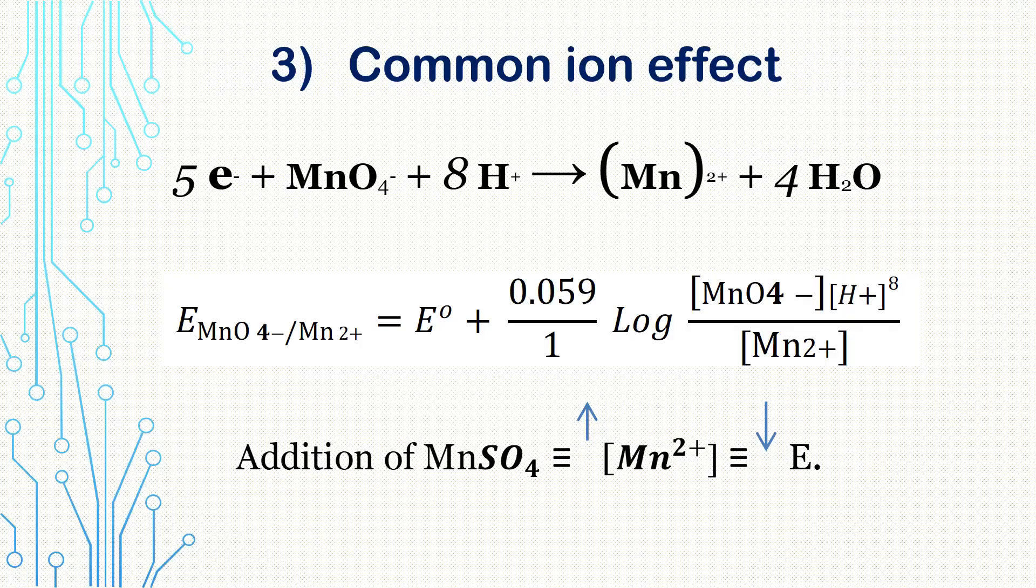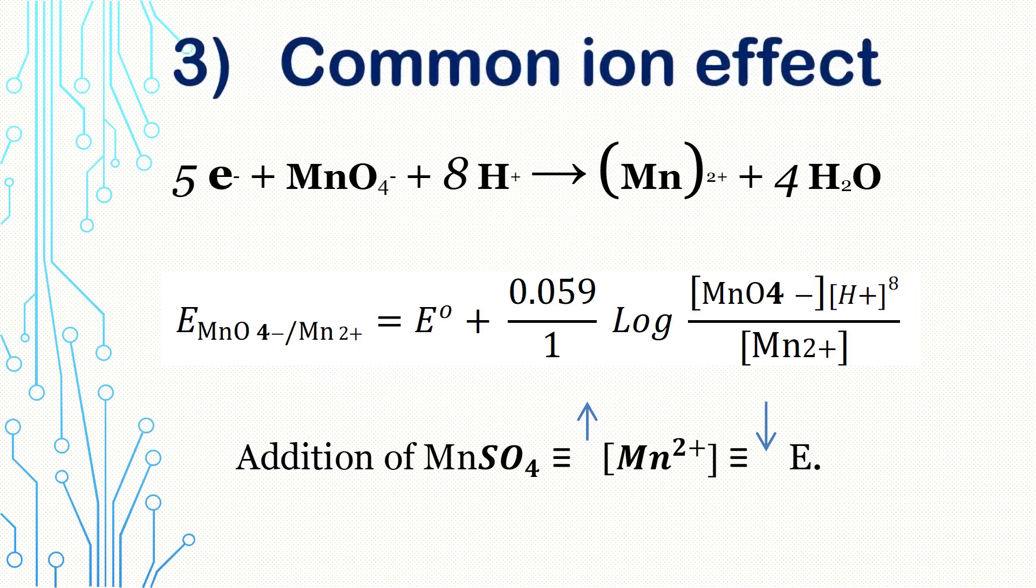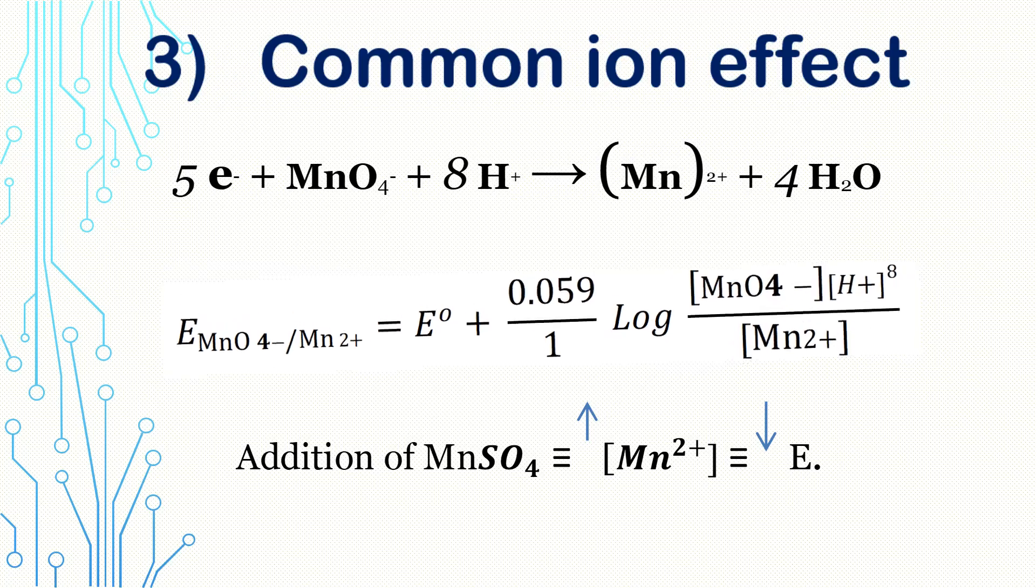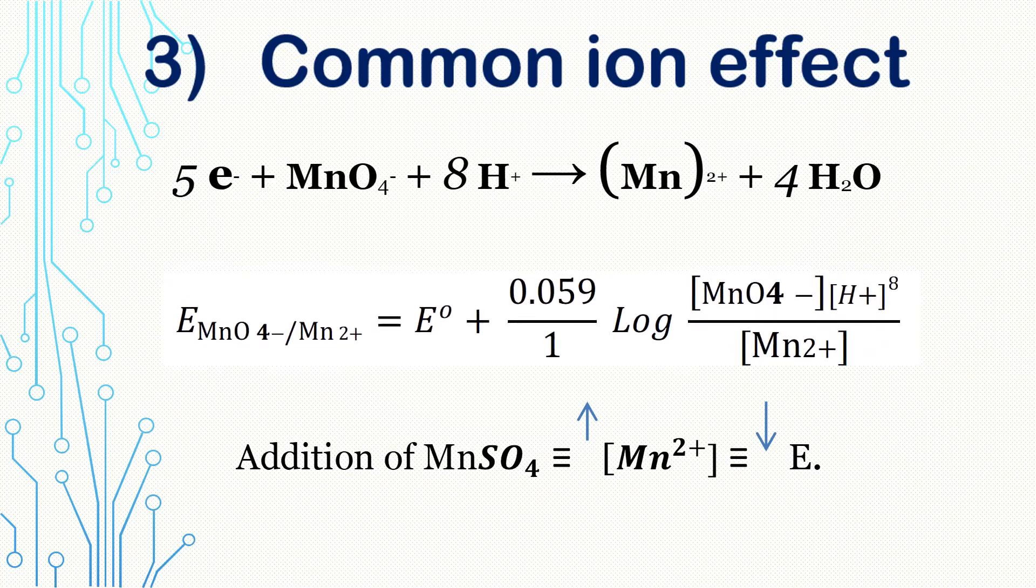And finally, we have our last factor that affects Nernst's equation. It's called the common ion effect. Adding manganese sulfate to permanganate solutions leads to increasing the concentration of the manganese ions. And, on the other hand, the potential decreases, because, as we see in the equation in front of us, there's an inverse relation between the concentration of the manganese and the oxidizing power.